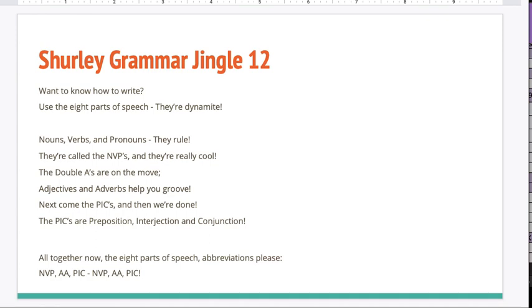So the eight parts of speech, an easy way to remember them is by their initials. We're going to do Grammar Jingle 12 together. Want to know how to write? Use the eight parts of speech, they're dynamite. Nouns, verbs, and pronouns, they rule. They're called the NVPs, and they're really cool. The double A's are on the move. Adjectives and adverbs help you groove. Next come the PICs, and then we're done. The PICs are preposition, interjection, and conjunction. Altogether now, the eight parts of speech, abbreviations please: N-V-P-A-A-P-I-C, N-V-P-A-A-P-I-C. Thanks for learning about the eight parts of speech with me today.